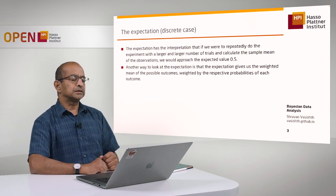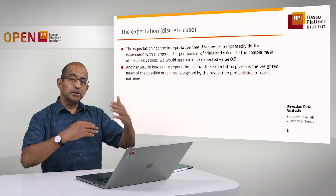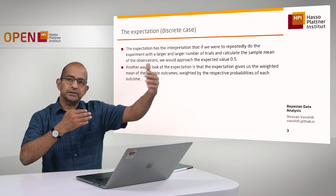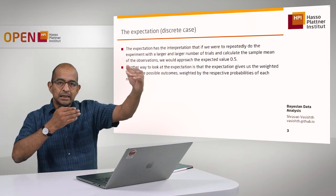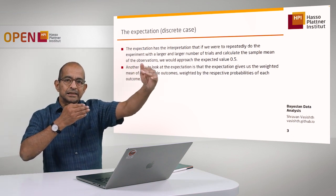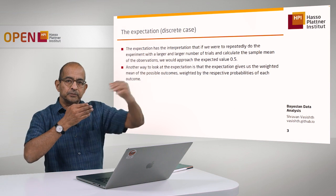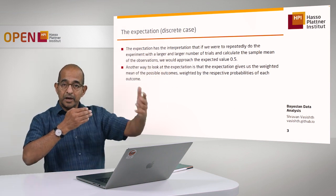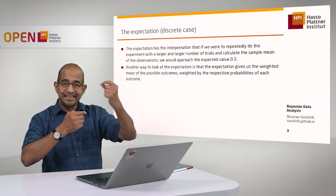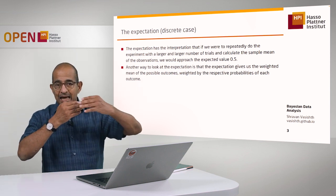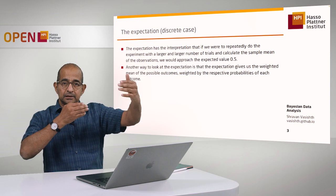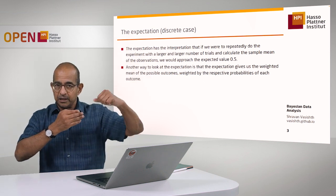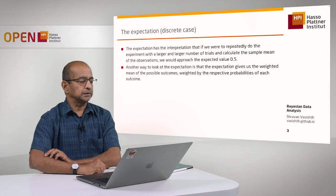The expectation has this interpretation: if you were to repeatedly do the experiment with larger and larger sample sizes, we would start getting the expected value of that random variable — in this case, 0.5. In the Bernoulli example, theta has a value of 0.5, and as we increase the sample size and repeatedly run the experiment, we'll get closer and closer to 0.5 in this limiting case.